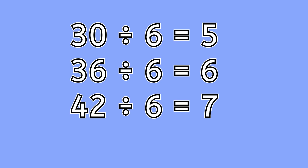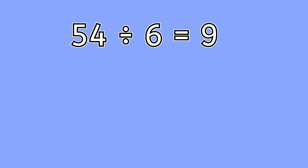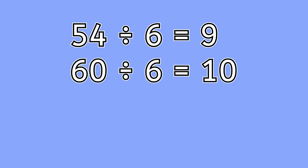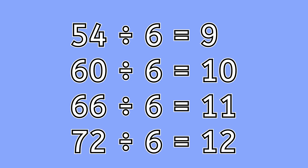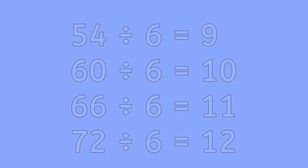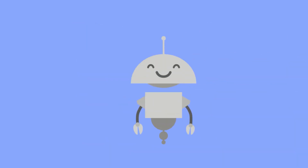42 divided by 6 is 7. 48 divided by 6 is 8. 54 divided by 6 is 9. 60 divided by 6 is 10. 66 divided by 6 is 11. 72 divided by 6 is 12. Let's multiply and divide with 6.